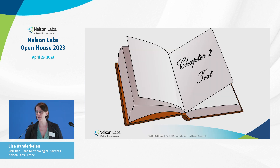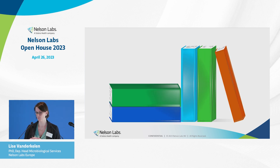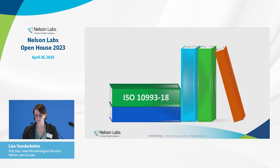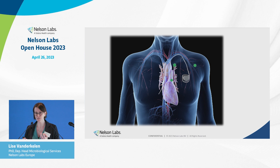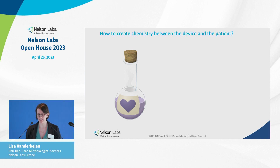Once you know how chapter one is built, you can continue to chapter two. In chapter two, you're going to describe and perform tests, or you outsource those tests, and therefore you have a lot of books you can get inspiration from. If you're doing extractables and leachables testing, that is all ISO 10993-18. Getting to know your device means you want to know which components from your device will leach into your body and might be harmful. So you want to understand the chemistry of your device in order to create chemistry on a different level between the patient and your device.